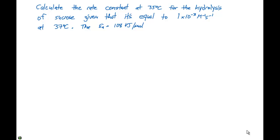In this problem, we are to calculate the rate constant at 35 degrees Celsius for the hydrolysis of sucrose, given it's equal to 1.0 times 10 to the minus three molar to the minus one second to the minus one at 37 degrees Celsius.